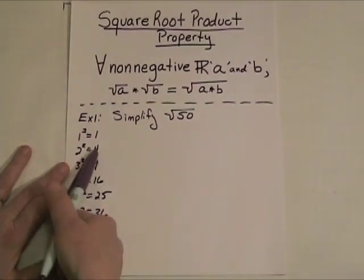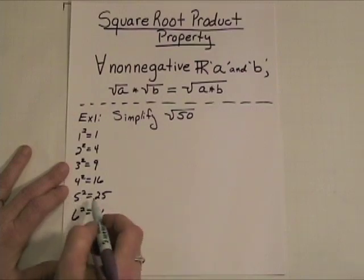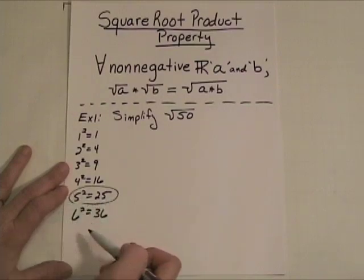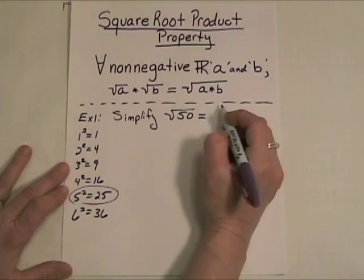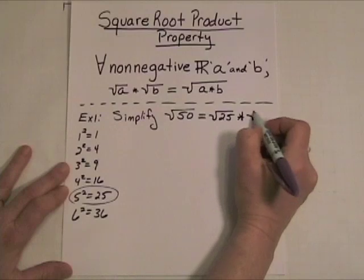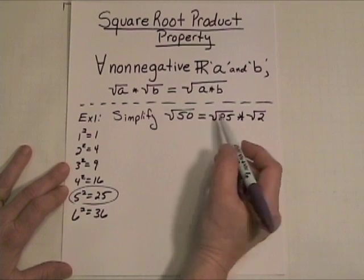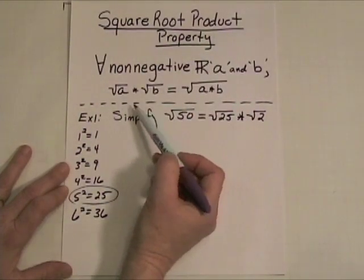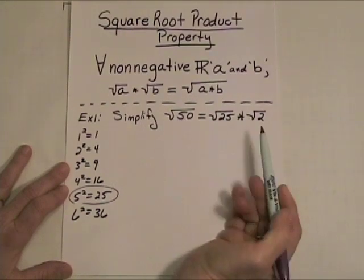These numbers right here are all what we call perfect squares. And if any of these could be factors of 50, we can go ahead and square root them out. Well, it turns out that this one right here, 25 is a factor of 50. So, we can write the square root of 50 like this. The square root of 25 times the square root of 2, because 25 times 2 is equal to 50. And the square root product property allows us to split this up into two little pieces like this.